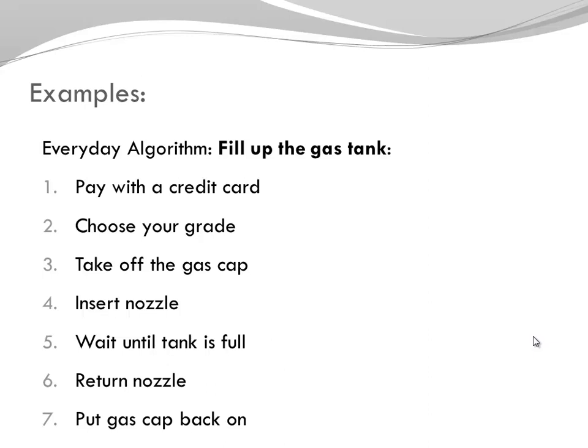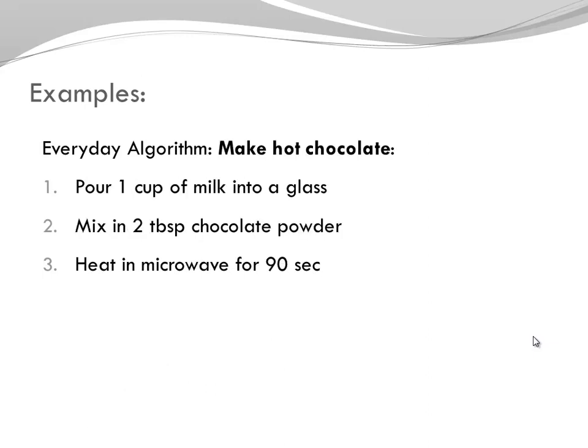Or here is another example: how to make hot chocolate. Pour one cup of milk into a glass, mix in two tablespoons of chocolate powder, heat in the microwave for 90 seconds. You can see that this is, of course, a recipe. Recipes are special kinds of everyday algorithms.